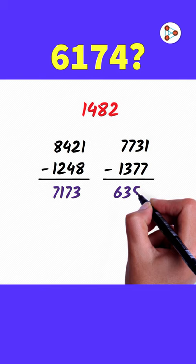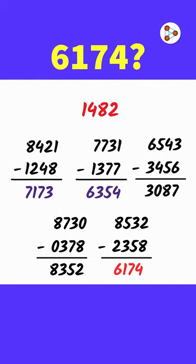We continue the process and the last number we get will always be 6174, no matter which four-digit number we take with at least two different digits.